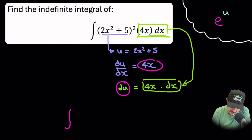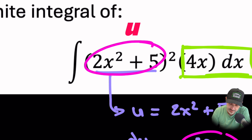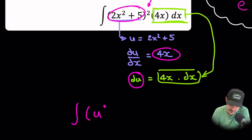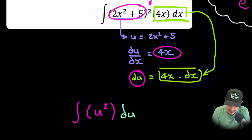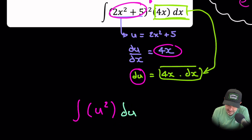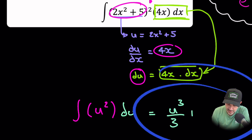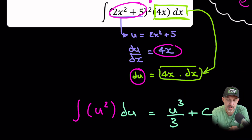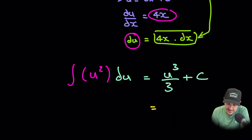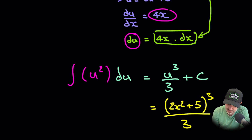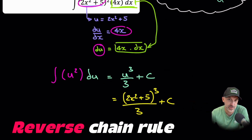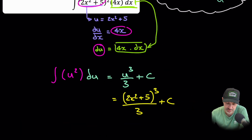Now we have the integral of U squared du — the 4x dx has been swapped with du. We can easily integrate that: add one to the power and divide by the new power, giving U³/3, and because it's an indefinite integral, plus C. Replacing U back in, that's (2x² + 5)³ / 3 + C. Hence the name reverse chain rule — we simply undid the chain rule.